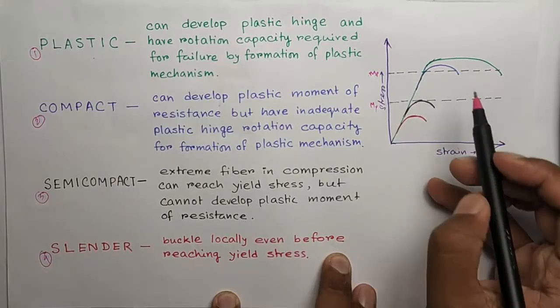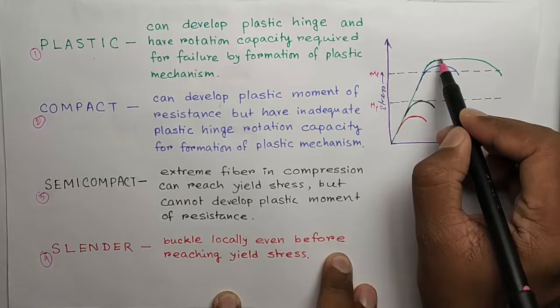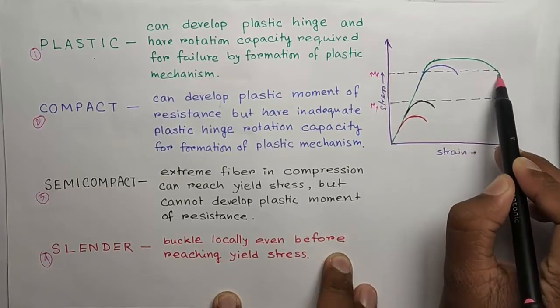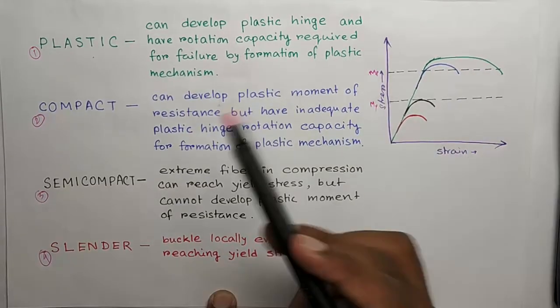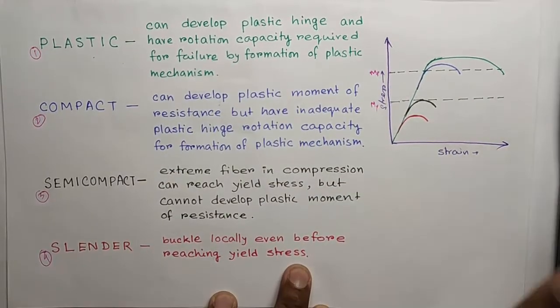So you see this green line, it goes above this plastic moment and that is adequate strain before the failure. So plastic section can develop this plastic hinge and there is a rotation capacity.